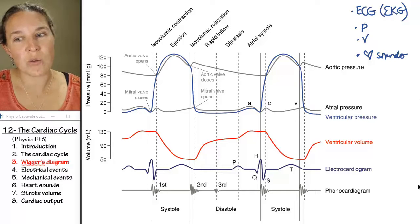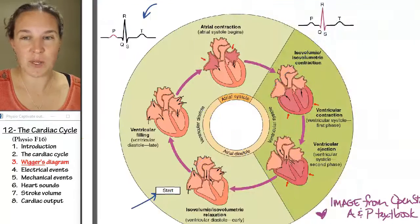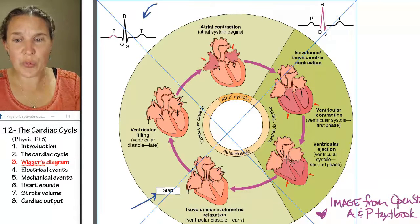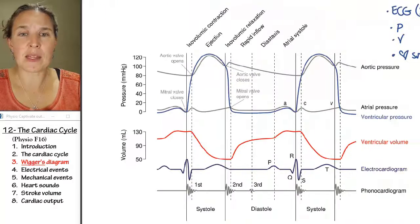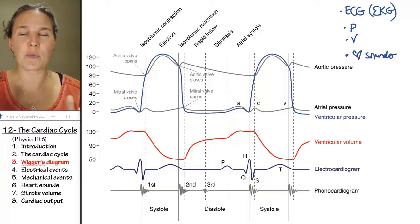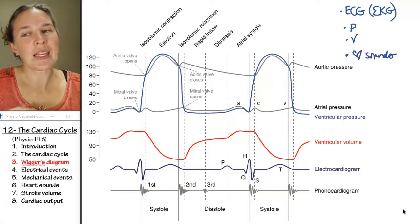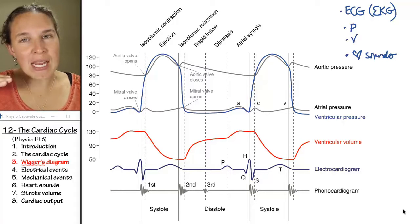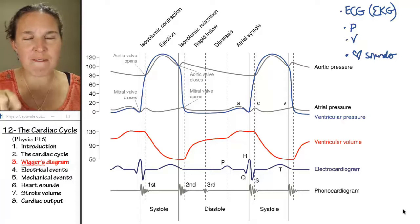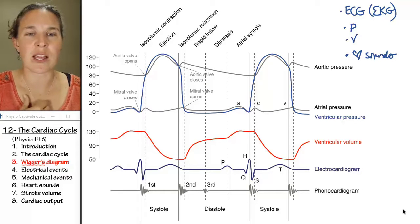You might want to combine this visual with this one. So as we work through the Wigger's Diagram and we unpack all these layers and put together the whole big picture, be sure you're keeping in mind the actual events in the heart muscle itself, the atria and the ventricles, what's actually happening. Okay.